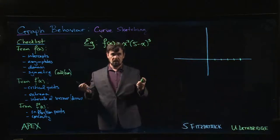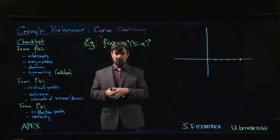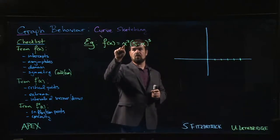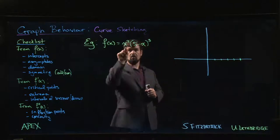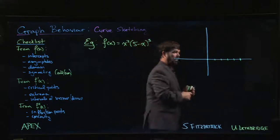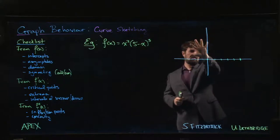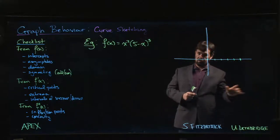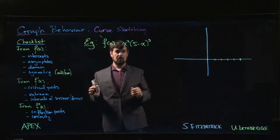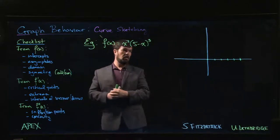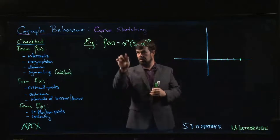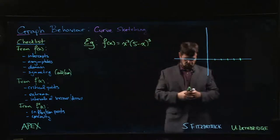If you're so inclined, you can do a sign diagram for the original function. Because the (5-x) factor is squared, the only sign change takes place at x=5. This will always be positive before five and negative after five, so we're above the x-axis everywhere until x=5. We also know there has to be a minimum at zero, because we touch the x-axis there but the function doesn't become negative.